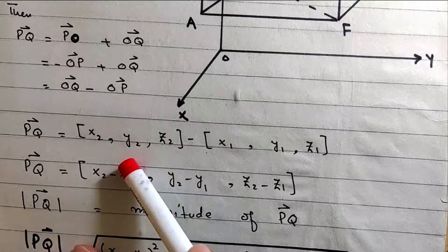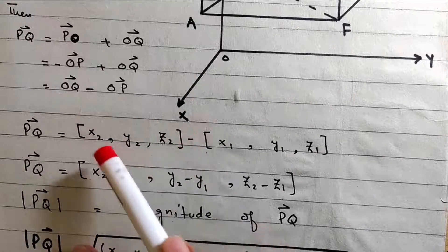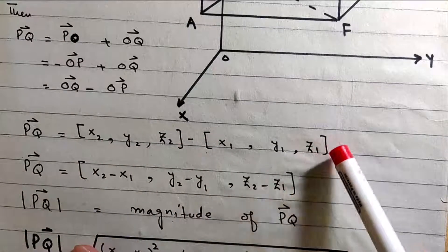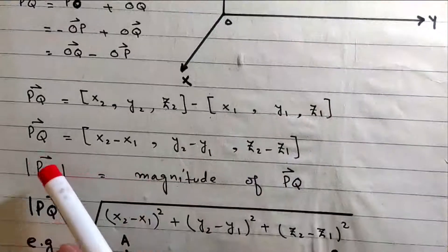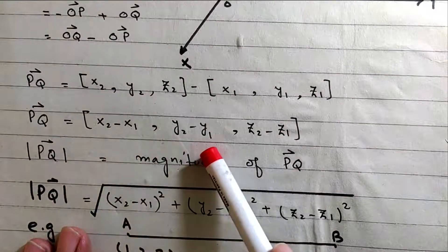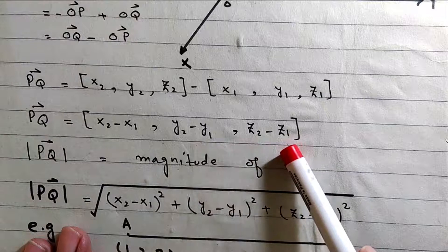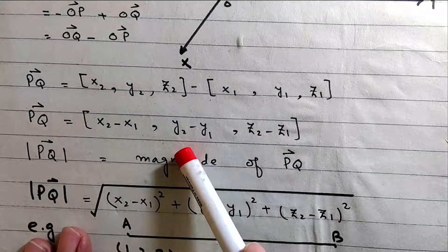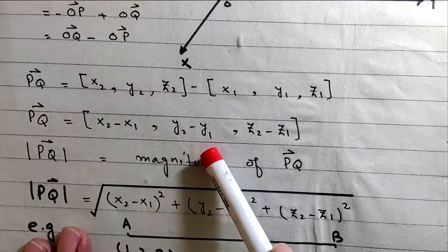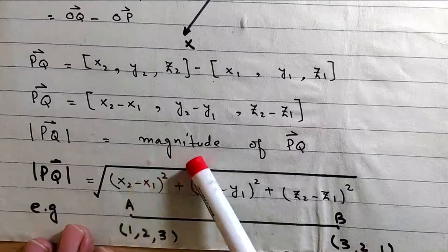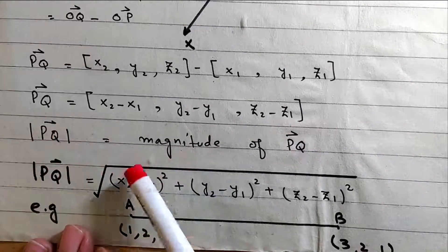Vector PQ equals (x2, y2, z2) minus (x1, y1, z1), giving us components (x2 minus x1), (y2 minus y1), (z2 minus z1). Now taking the magnitude of PQ.